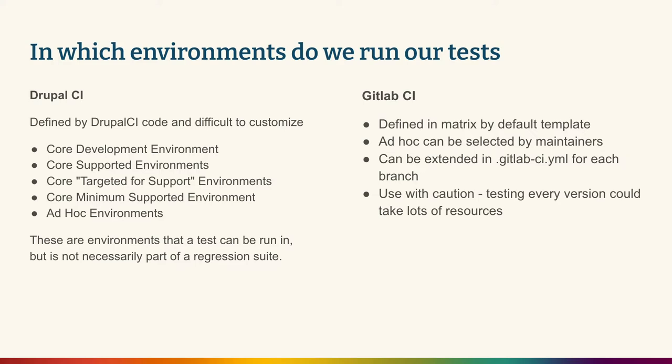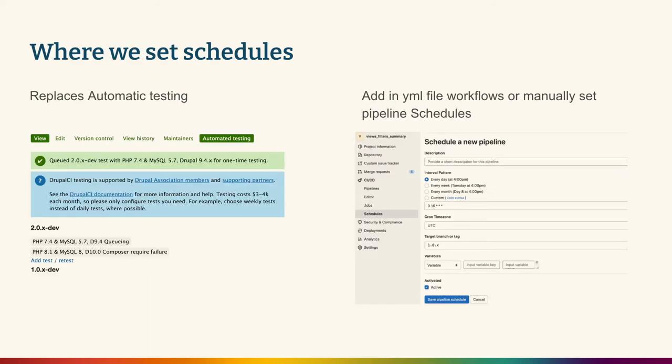We are defining a set of default environments where you can run tests, and I'll explain how testing environments can be chosen using semantic labels defined in variables in include files. GitLab CI has a very powerful system of pipelines and schedules — you go under the schedules tab and can schedule any pipeline you want to run, and it is very easy to maintain.